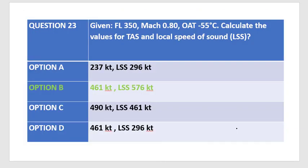So, if we look at our options, we realize that option B matches our answers. That is 461 knots and 576 knots. Option B is our answer.